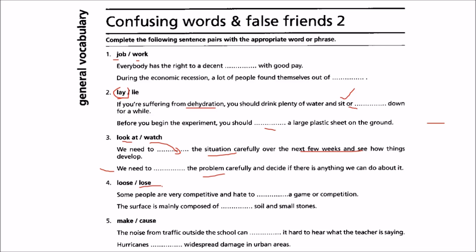Lose and loose — both pronunciations sound similar. Some people are very competitive and hate to lose a game or competition, so here we use 'lose', meaning not winning. While in this case, the surface is mainly composed of loose soil and small stones. 'Loose' means not compact, not in a group — spread out into its constituents.